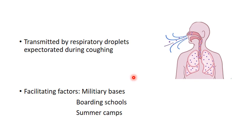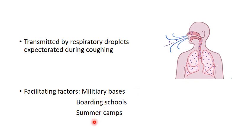One important species is Mycoplasma pneumoniae, which is the causative agent of primary atypical pneumonia. Mycoplasma pneumoniae is transmitted by respiratory droplets expelled during coughing, and this transmission is favored by close contact settings such as military bases, boarding schools and summer camps.